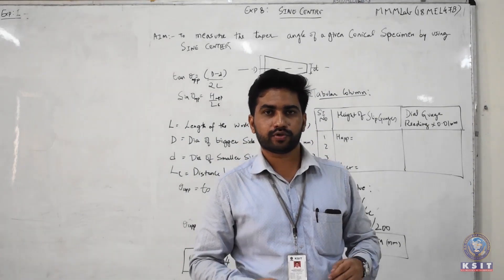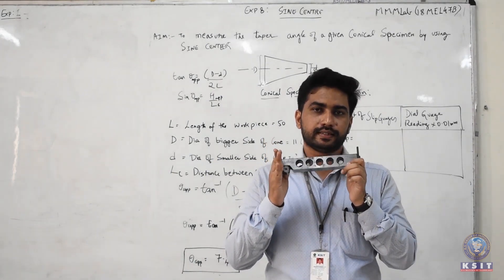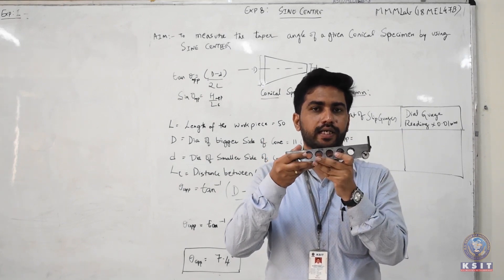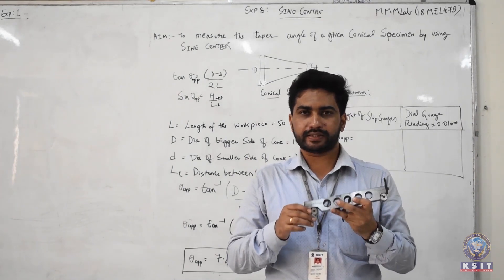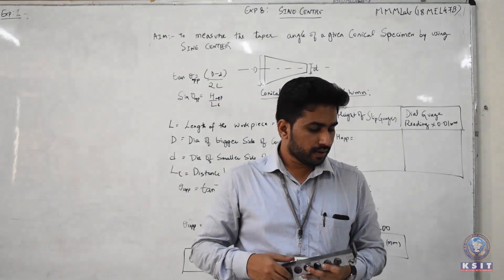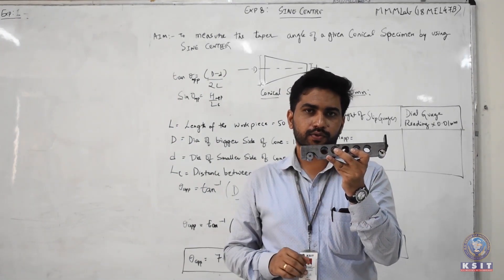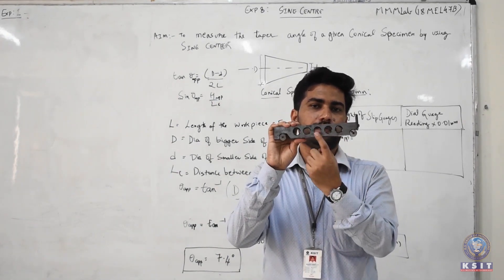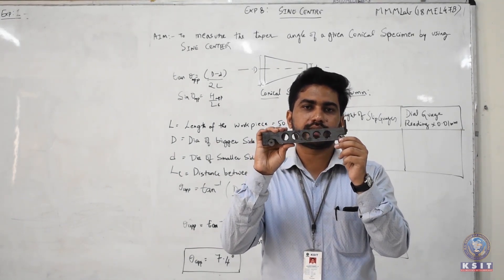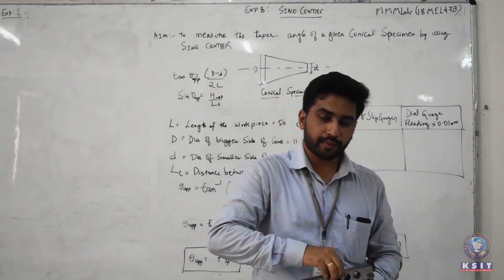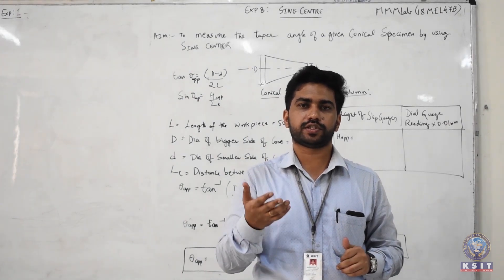Both the sine bar and the sine center are used to find the unknown angle with respect to the tapered surface. With an extra arrangement and auxiliary equipment we have the sine center. The difference is that for the sine bar we have a tapered cross-sectional area as the specimen, while for the sine center we have the conical surface. The sine bar is made up of high carbon steel and high chromium steel, which gives it corrosion resistance and toughness. There are relief holes between the gauge length to relieve stresses and avoid bending stresses when a load is applied on top of the sine bar.